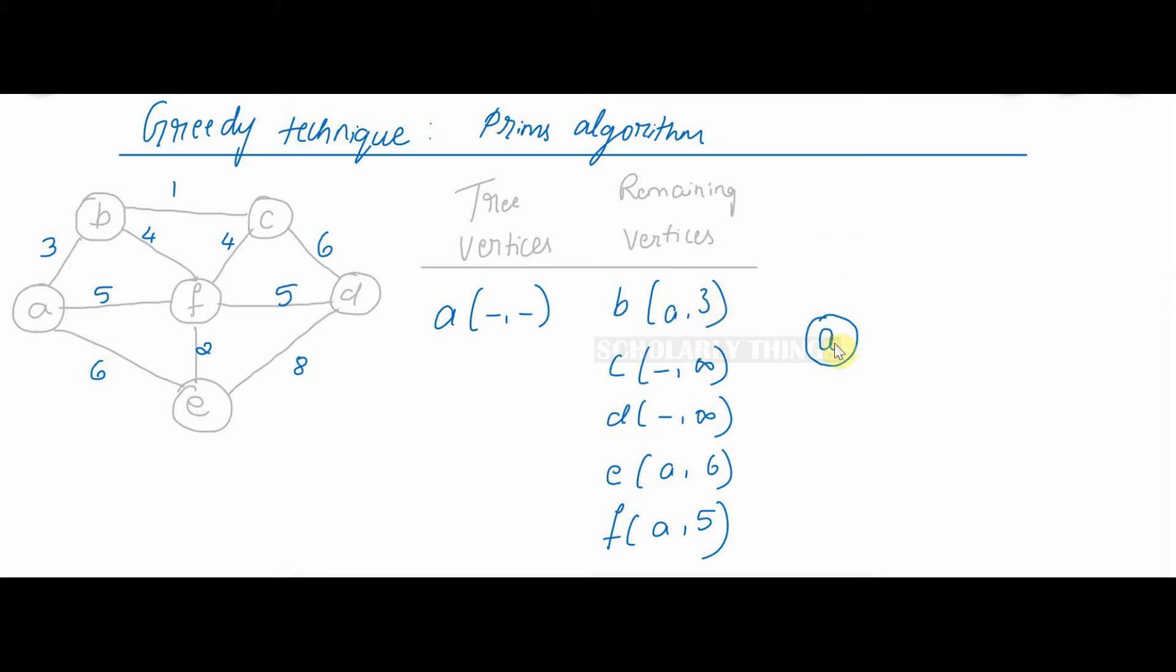So from A I go to B with weight 3. Now the current tree vertex is B of A, 3.